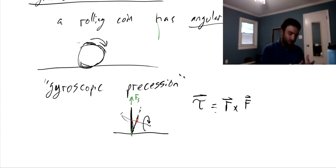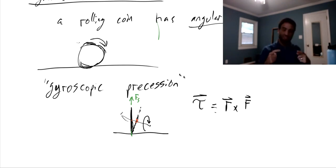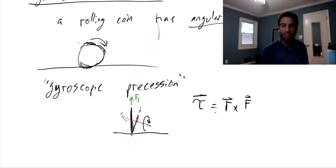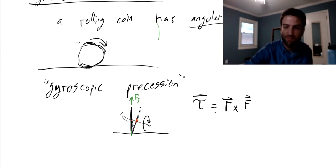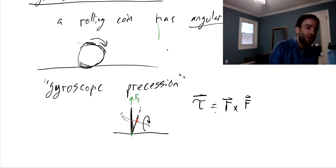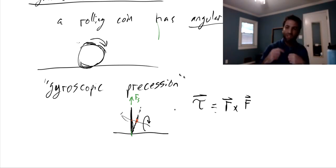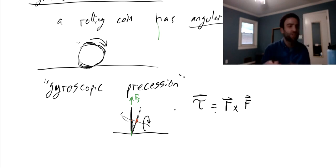That explains why the coin can stay upright as it rolls along. It also explains why the coin eventually falls over - friction saps it of kinetic energy, and when it slows down to the point where this dynamic stabilization doesn't kick in and no longer brings itself underneath its own center of mass as it leans one way or the other, eventually the coin falls over. Gyroscopic precession explains why a rolling coin or a single wheel sent moving will stay upright for a certain amount of time.